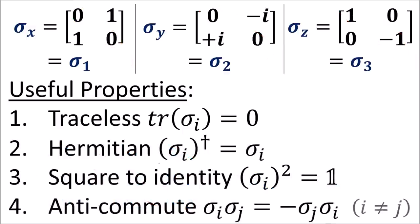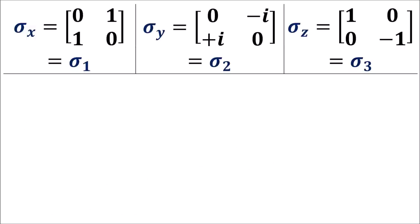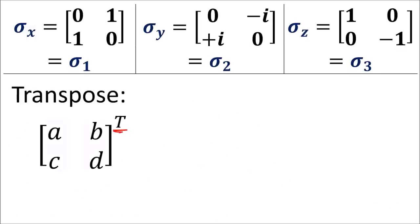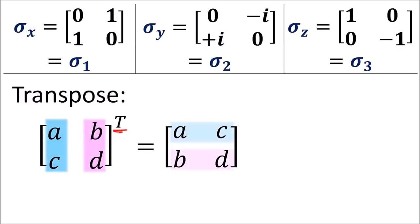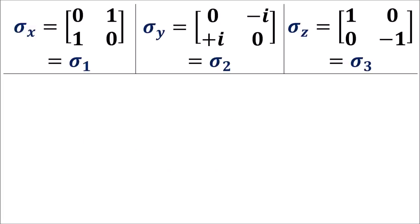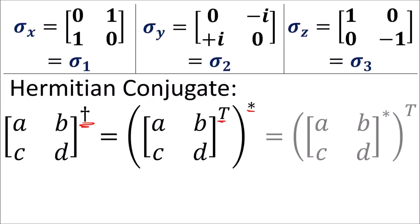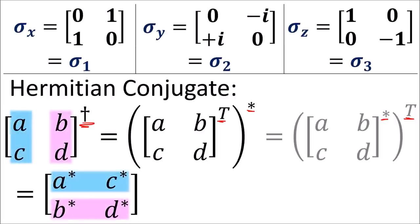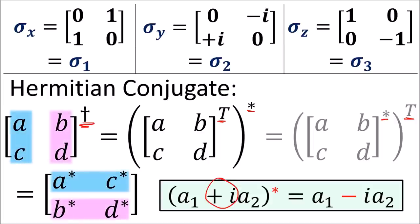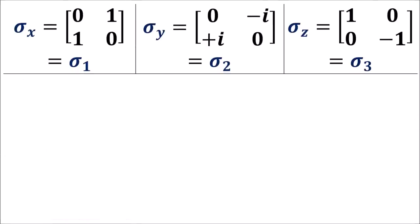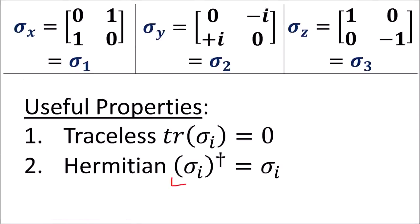Let's move on to the Hermitian property. The transpose of a matrix, denoted with T, just means we flip a matrix's rows and columns. But when matrices have complex entries, we're usually more interested in the Hermitian conjugate, denoted with a dagger symbol. This means that we take the transpose of the matrix and take the complex conjugate of each entry, which flips the sign of each imaginary i.